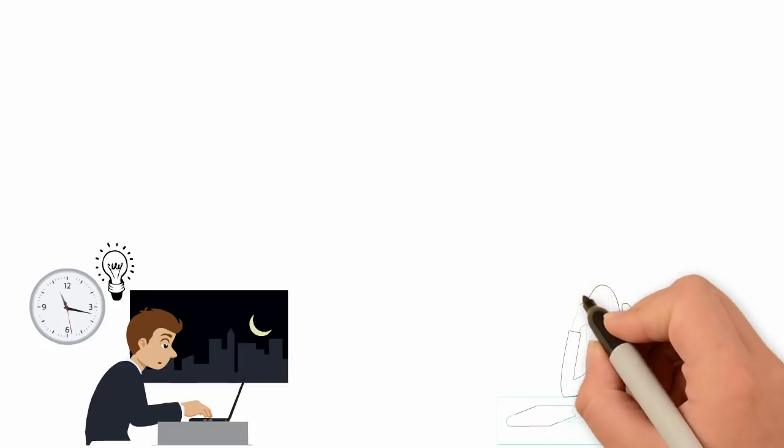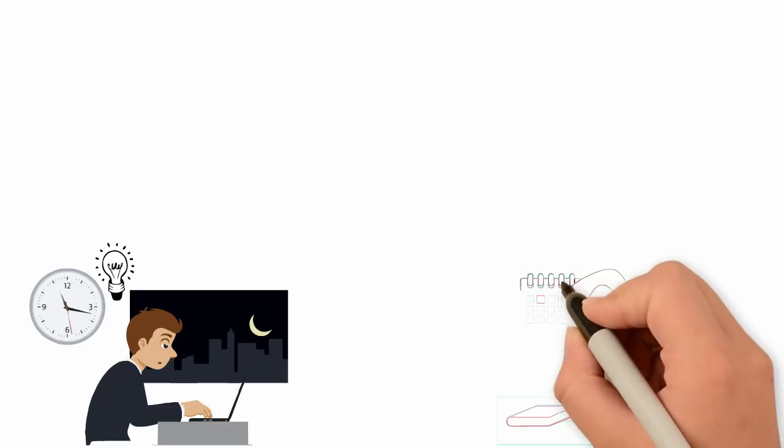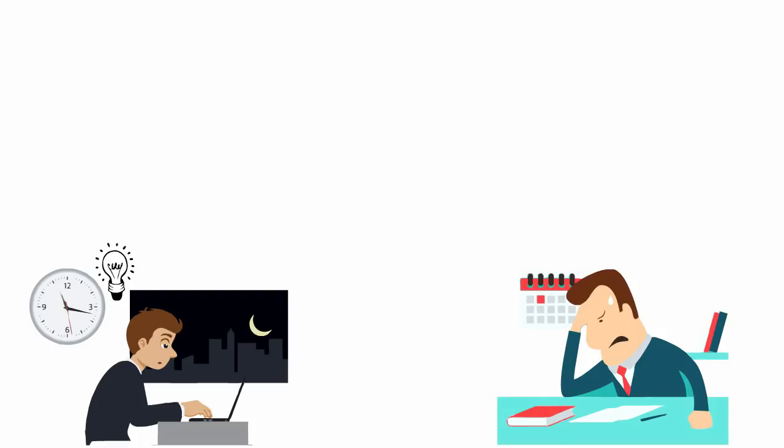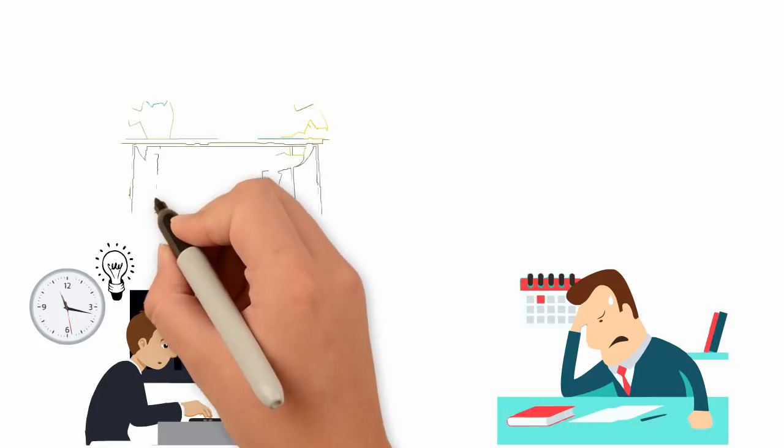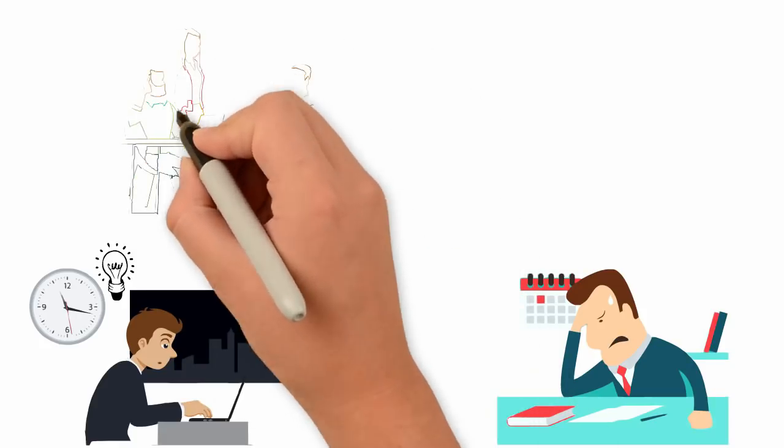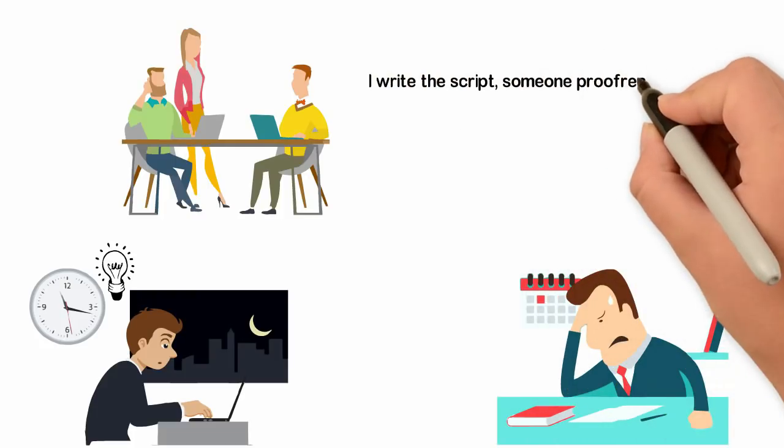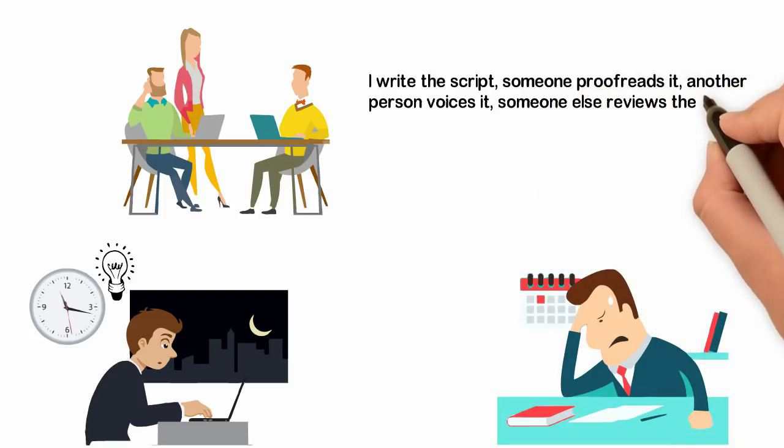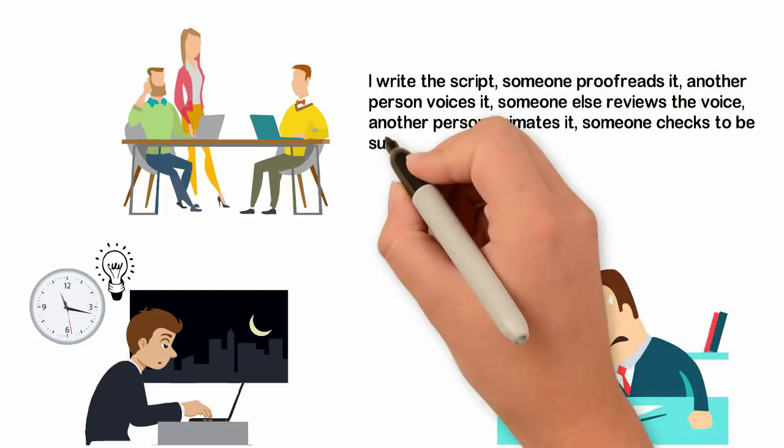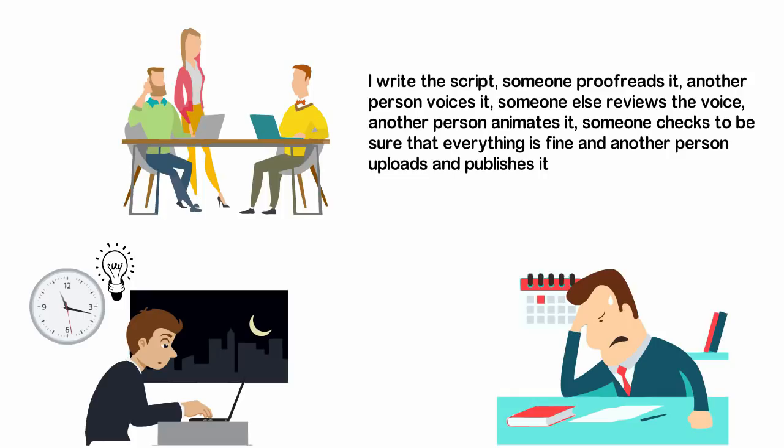Your favorite musician probably spends an entire year to write, practice and record the music you like the most. The movie you like most was probably written, shot and only released after five years have been invested into it. The YouTube videos you love watching were being made with a number of hours you wouldn't believe. Take for instance, the video you're watching right now must have been worked upon by five or six people before you can watch it. I write the script, someone proofreads it, another person voices it, someone else reviews the voice, another person animates, someone checks to be sure that everything is fine and another person uploads and publishes it. But if I don't tell you this, you probably think it was simply made as you simply watch it.